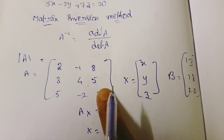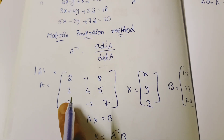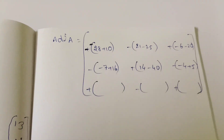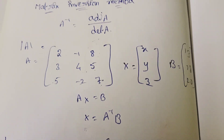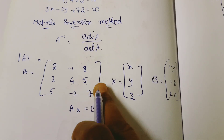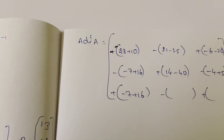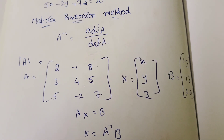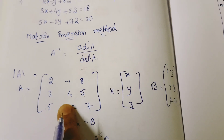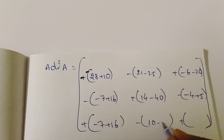C21 — row 2 column 2 closes, minus(minus1×7 minus 8×(minus2)) = minus(minus7 plus 16) = minus 9. C22 — row 2 column 2 closes, 2×7 minus 8×5 = 14 minus 40 = minus 26. C23 — row 2 column 3 closes, minus(2×(minus2) minus (minus1)×5) = minus(minus4 plus 5) = minus 1.